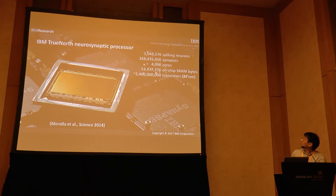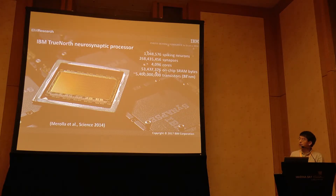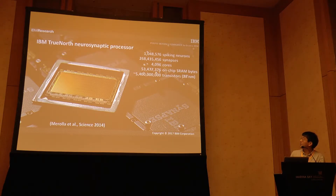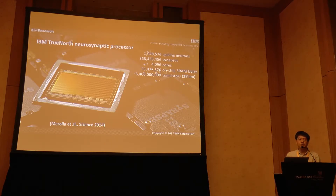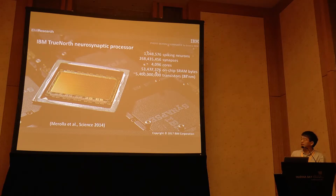Each of those cores has the neural parameters and synapse weights stored in local memory. There's over 50 megabytes of on-chip SRAM on that chip, which is one reason it's so big — over 5 billion transistors — which was pushing the size of GPUs at the time it was manufactured at 20 nanometer using Samsung's mobile process.